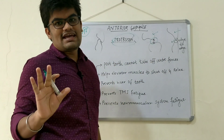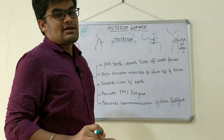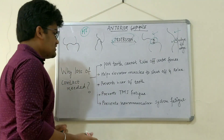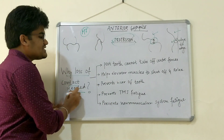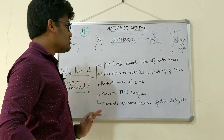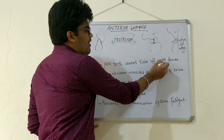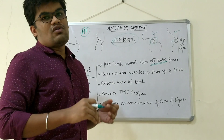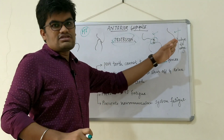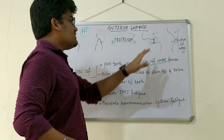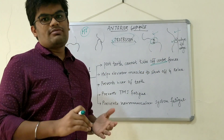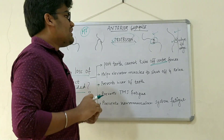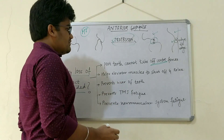This loss of contact is highly desirable in any type of dental prosthesis. The first and foremost reason is that posterior teeth cannot take off-center forces — they are only trained to take longitudinal forces. Whenever there is edge-to-edge contact of the anterior teeth, if the posterior teeth also come in contact, there will be a lot of shear forces on them, which may harm the periodontium of the posterior teeth.